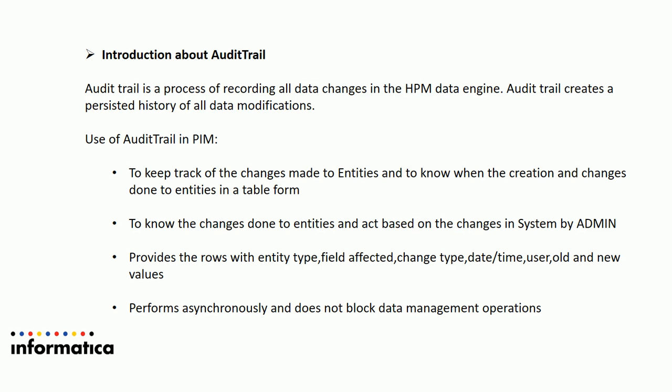If an administrator wants to extend this privilege, they can provide rich client access to a few users who should work accordingly. Audit trail provides rows showing the entity type, whether it is a new creation or an existing data change, which fields were affected, the change type (creation or modification), the date and time stamp of when the data was changed, which user modified it, and the old and new values. Importantly, audit trail performs asynchronously and does not block any data management operations.